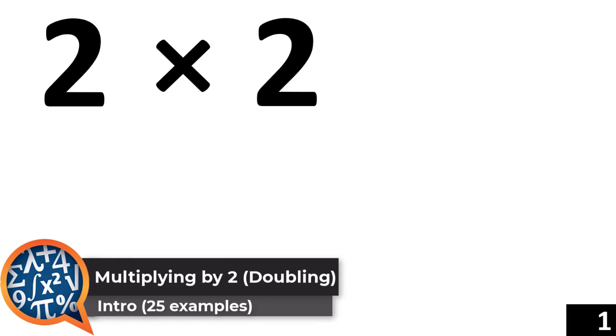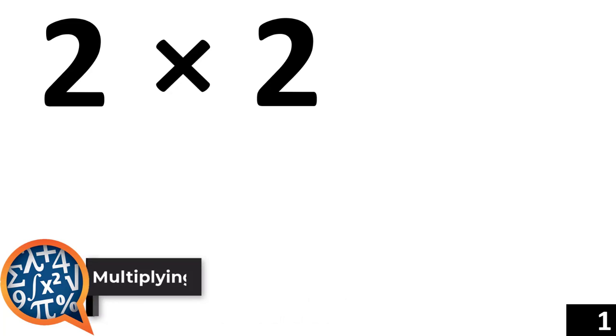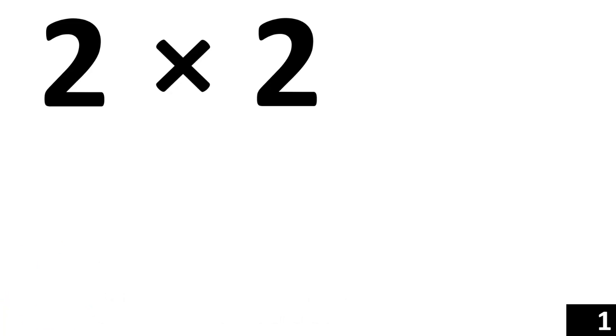In this video, we are going to take a look at the third multiplication rule — multiplying any number times 2 using the doubling method. Let's go.